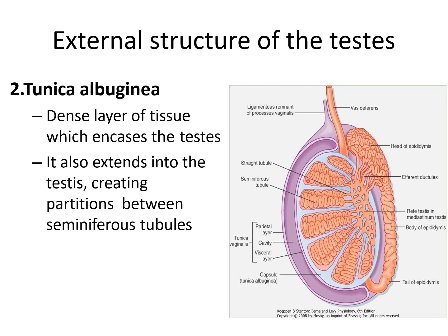All these lobules are formed by extensions of tunica albuginea into the testis. These seminiferous tubules are the sperm-producing sections of the testis.